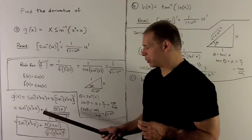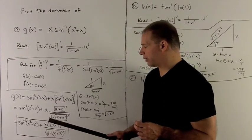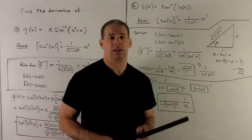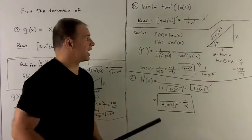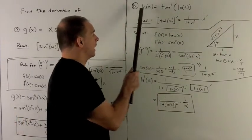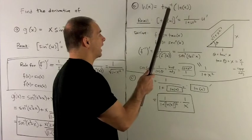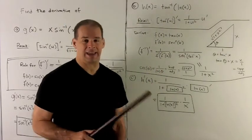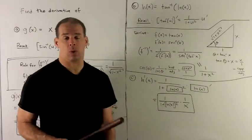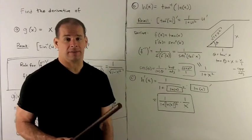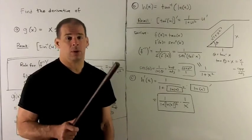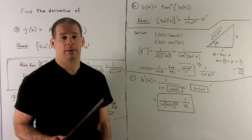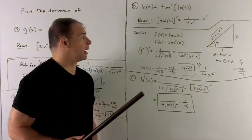So that's our product rule with the chain rule on an inverse sine. Let's try an inverse tangent: h of x equal to inverse tan of natural log of x. Recall the rule — the derivative of the inverse tangent is 1 over 1 plus u squared, times u prime.